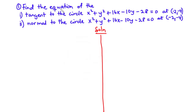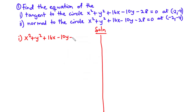Because we are solving part (i), the equation of the tangent to the circle, we are first going to find the center of the circle. Then, using this point, we can find the gradient of the radius passing through (−2, −4), and then the gradient of the tangent, and finally the equation of the tangent. To find the center, we compare this equation to the general equation of a circle: x² + y² + 2Gx + 2Fy + C = 0.